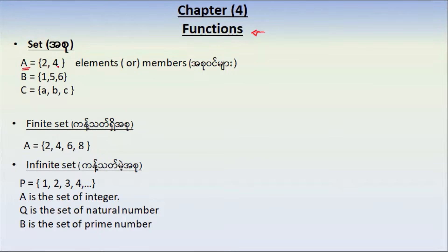The set notation: the set of {2, 4}. So this is the set of a, the set of {1, 5, 6}. So this is the set of {1, 5, 6}. So this is the set of {a, b, c}.